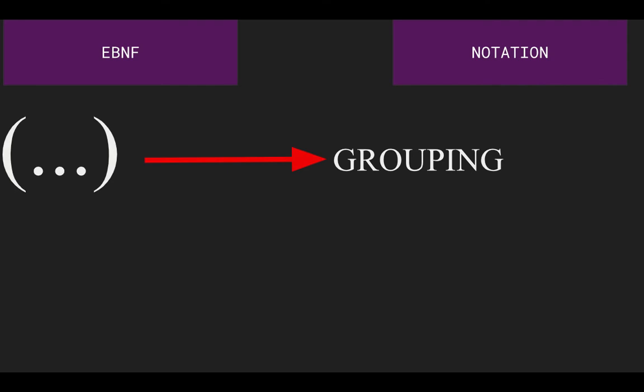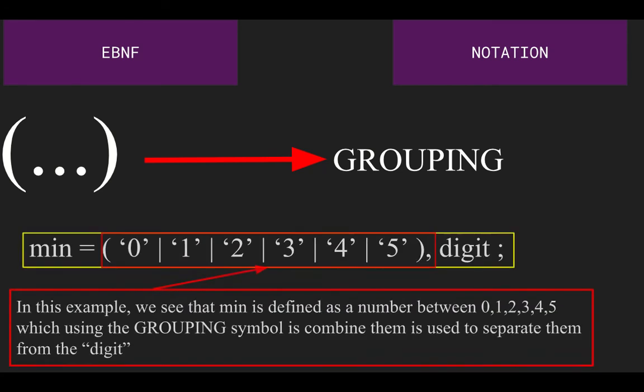Next, we have grouping. We have parentheses, which represents grouping, which are mainly used to group different terminals and non-terminals together and isolate them from other ones. In this example, minute is being determined by either the values of 0, 1, 2, 3, 4, and 5, which are grouped and then a digit value at the end.